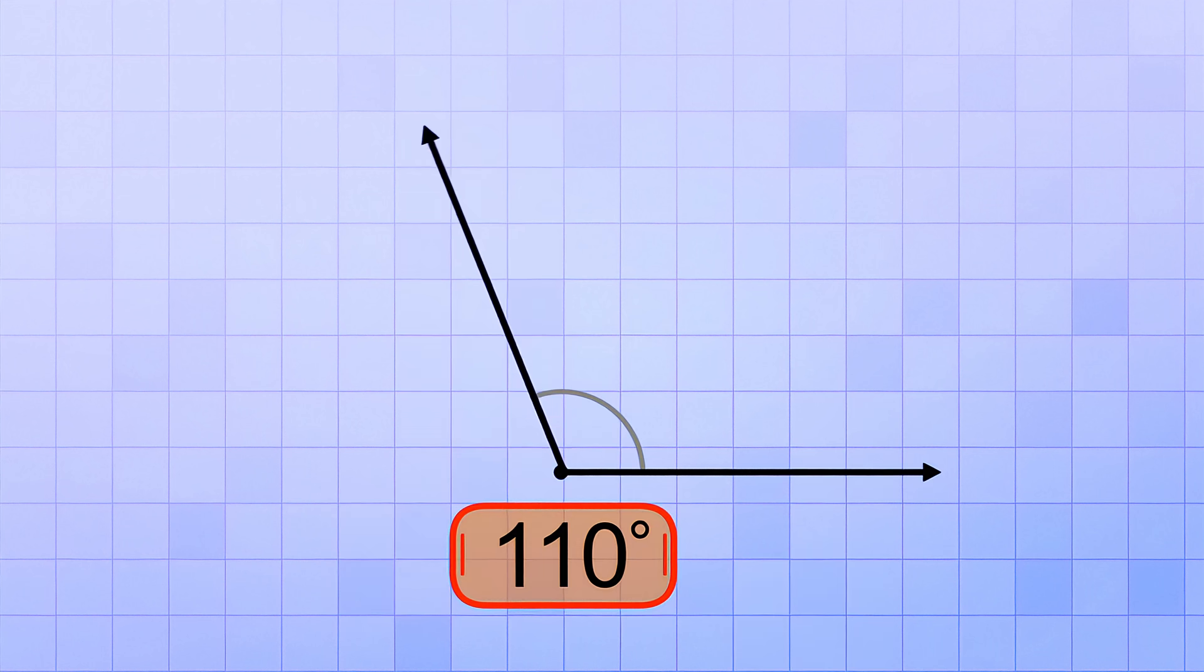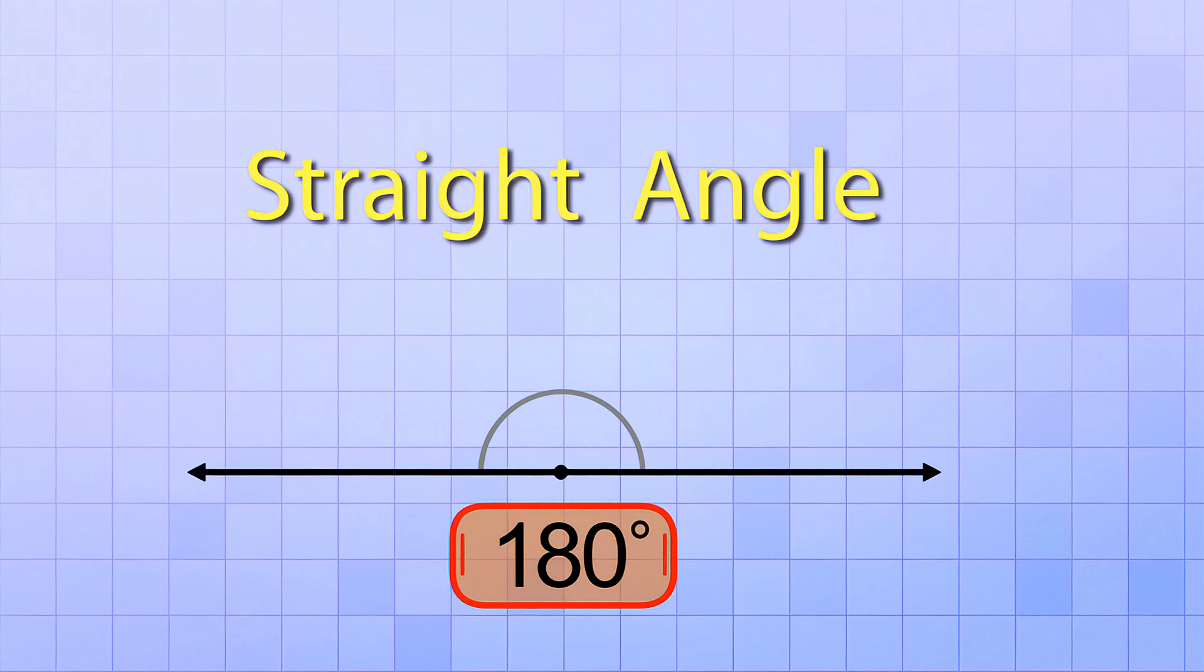100 degrees, 110, 120, 130, 140, 150, 160, 170, and 180. Aha! Does this look familiar? Yup, it's a straight angle like we learned about in the last video. The rays point in exactly opposite directions and the angle they form is 180 degrees. And that's also a really important angle measurement to memorize.